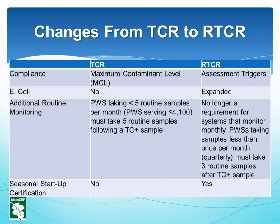Key Changes from TCR to RTCR. The Total Coliform Rule (TCR) established a maximum contaminant level (MCL) based on the presence or absence of total coliforms, and also requires sanitary surveys for systems collecting fewer than five samples per month. The Revised Total Coliform Rule (RTCR) established an MCL for E. coli and uses E. coli and total coliforms to initiate a find-and-fix approach to address fecal contamination that could enter the distribution system.